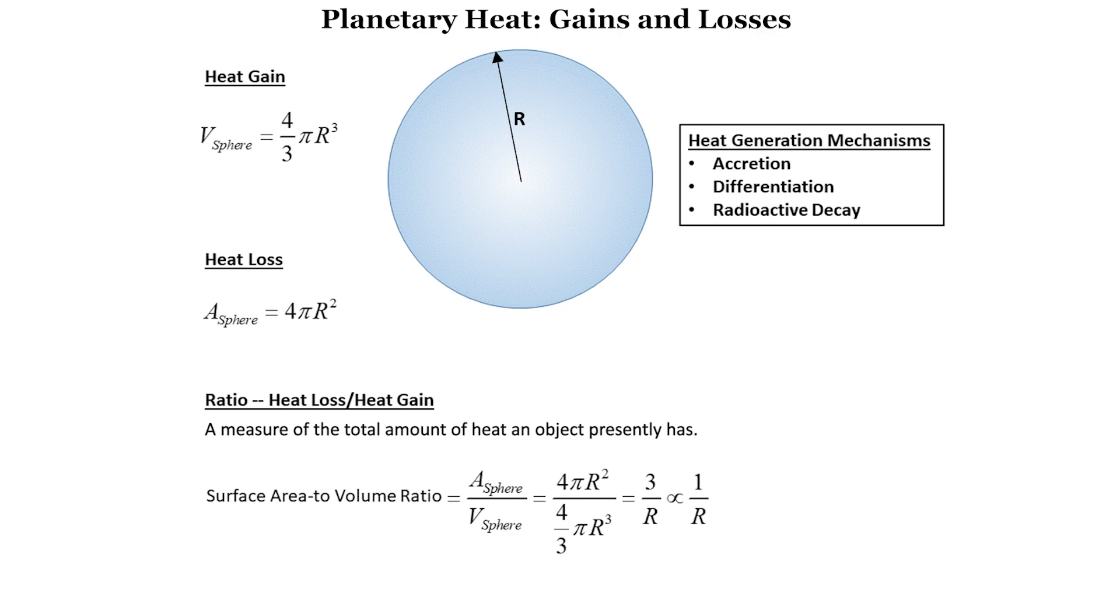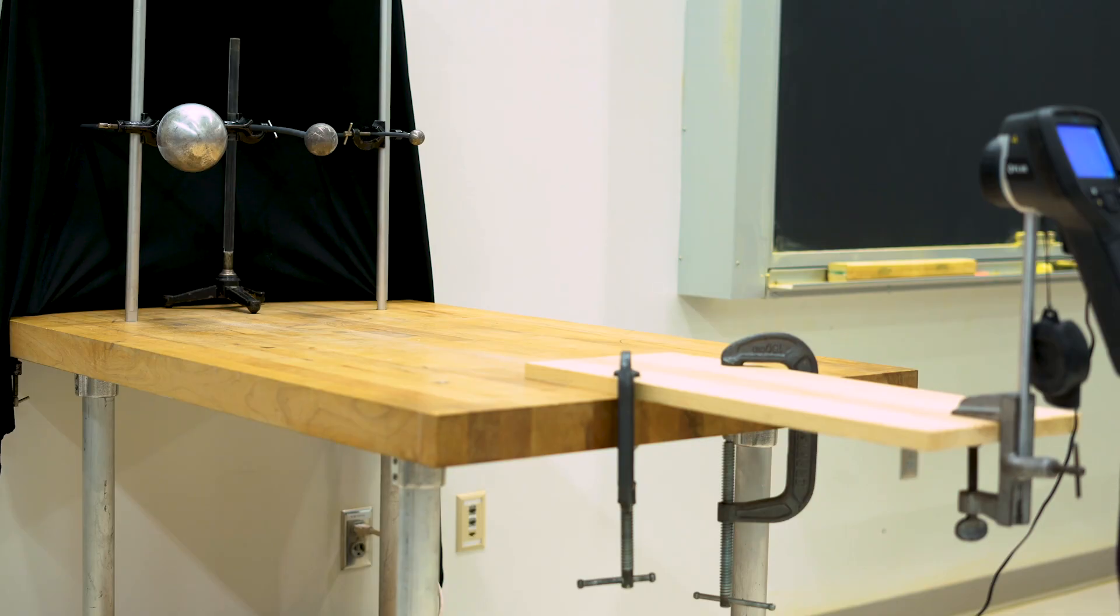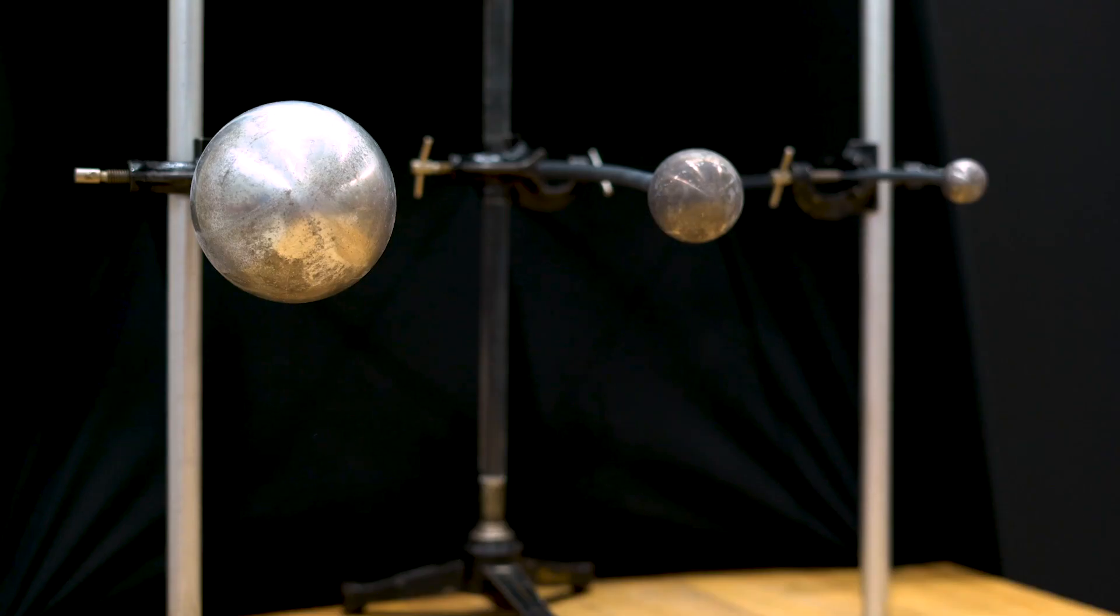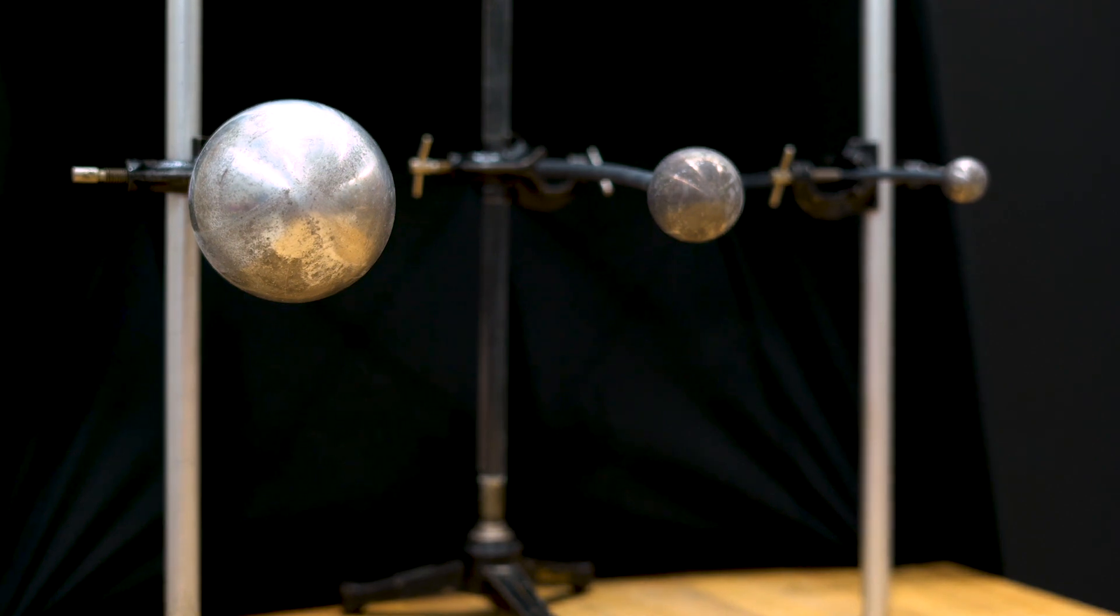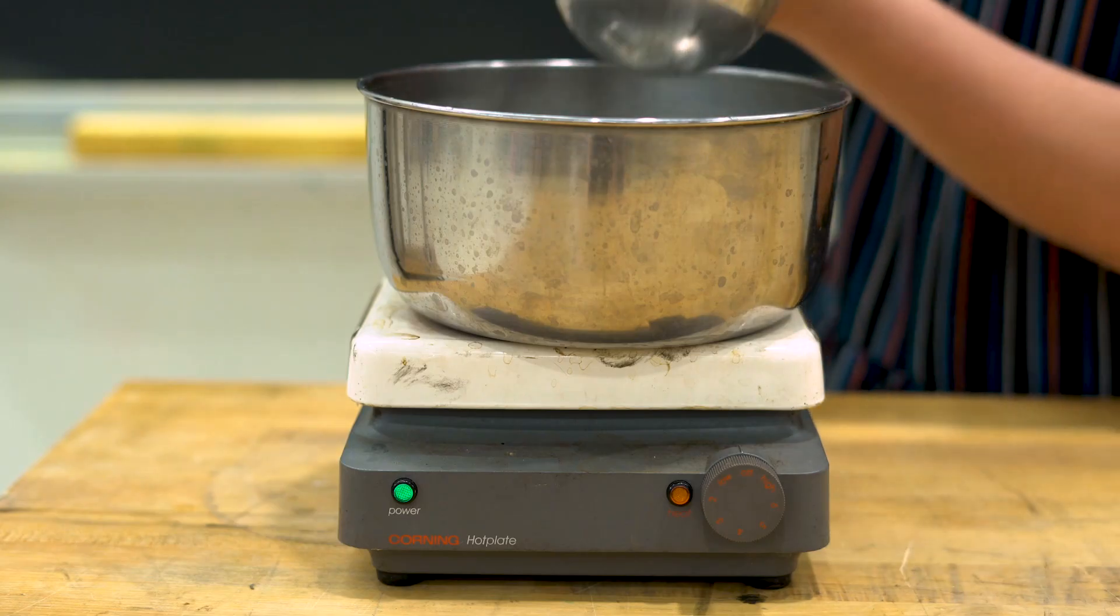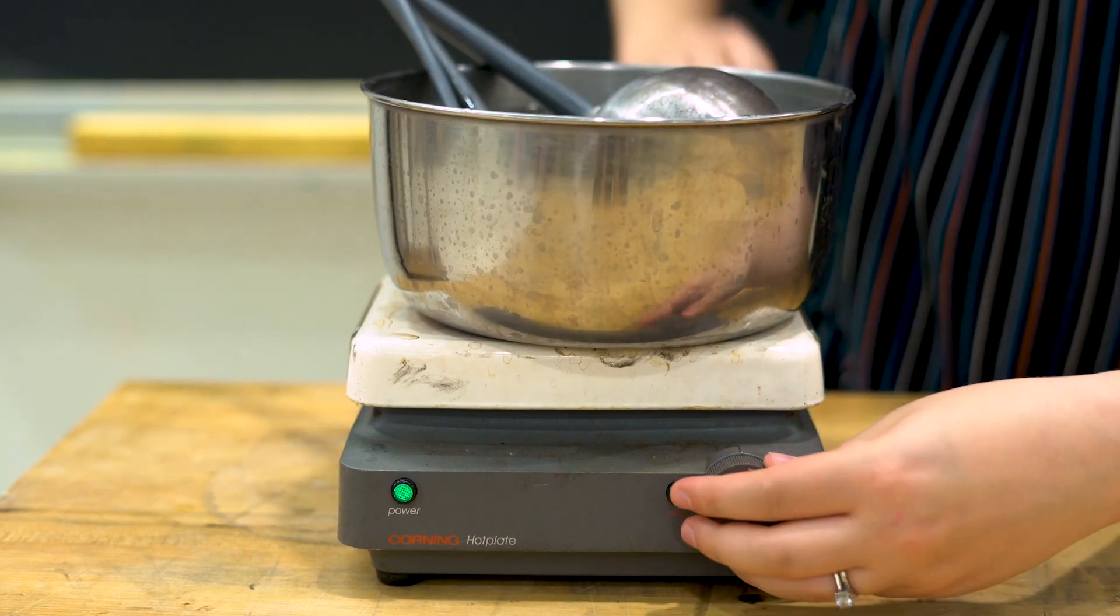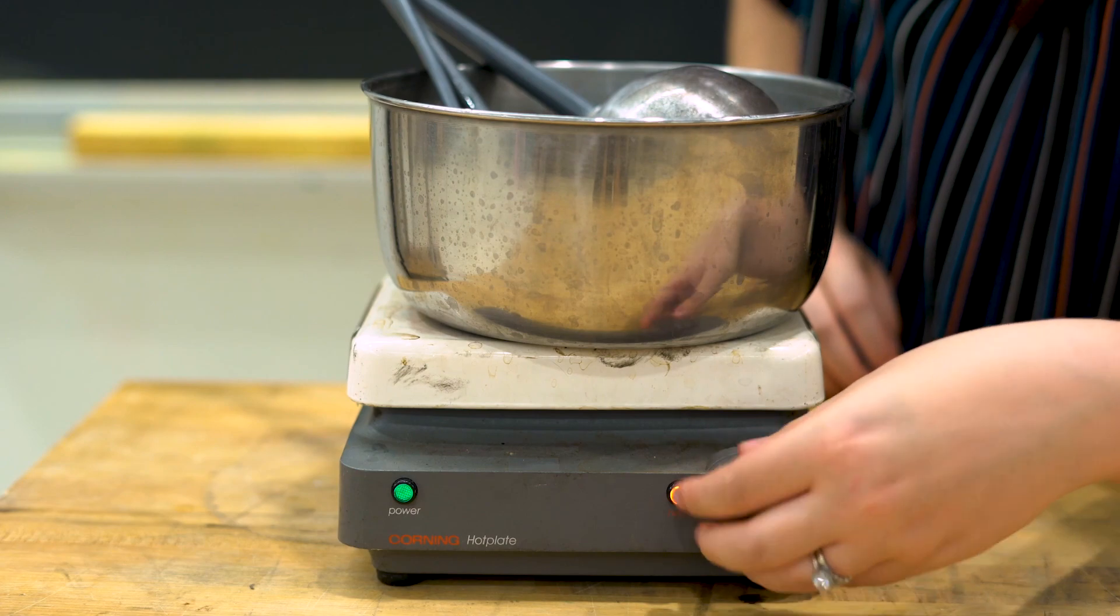A large planet will lose its heat at a slower pace. Even though it loses a lot of heat through its larger surface, it has so much more heat to start with because of its volume. To explore this phenomenon, we have created solid spheres of aluminum of different sizes—a 4 inch diameter, a 2 inch diameter, and a 1 inch diameter. We heat a reservoir of water to a temperature near boiling and leave the spheres submerged until they all come to that temperature at their cores.